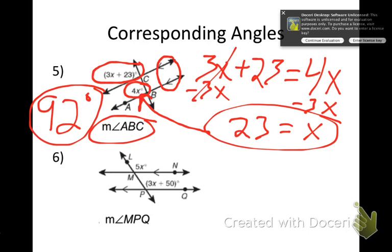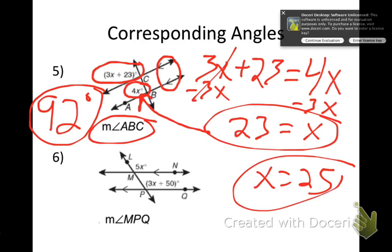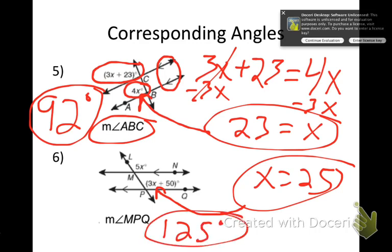Try number 6 on your own. When you solve it, you get x equal to 25. Plugging that back in for angle MPQ gives an angle measure of 125 degrees.